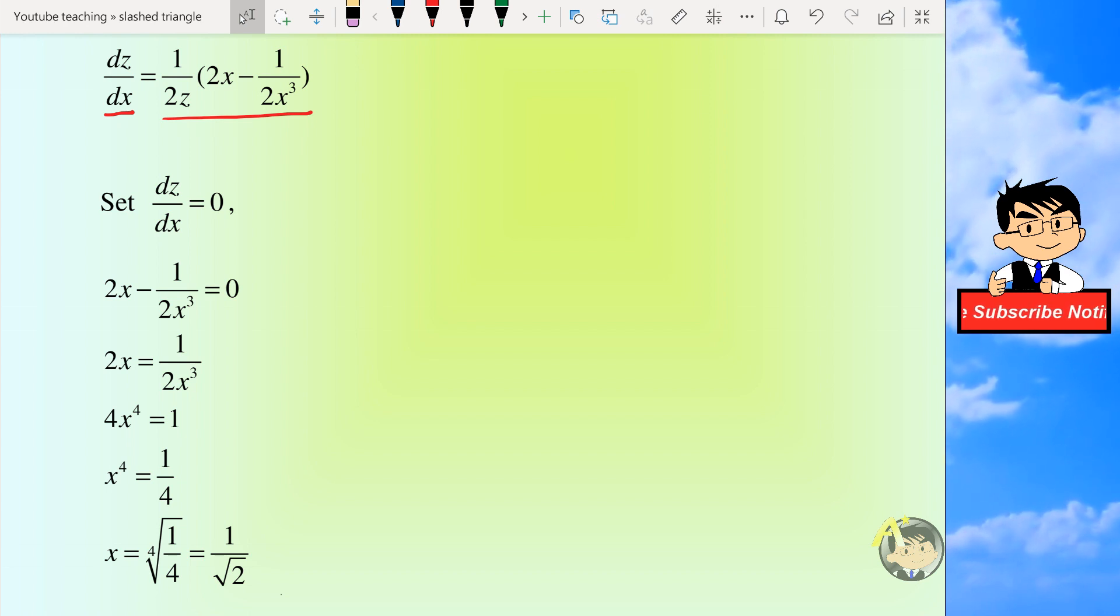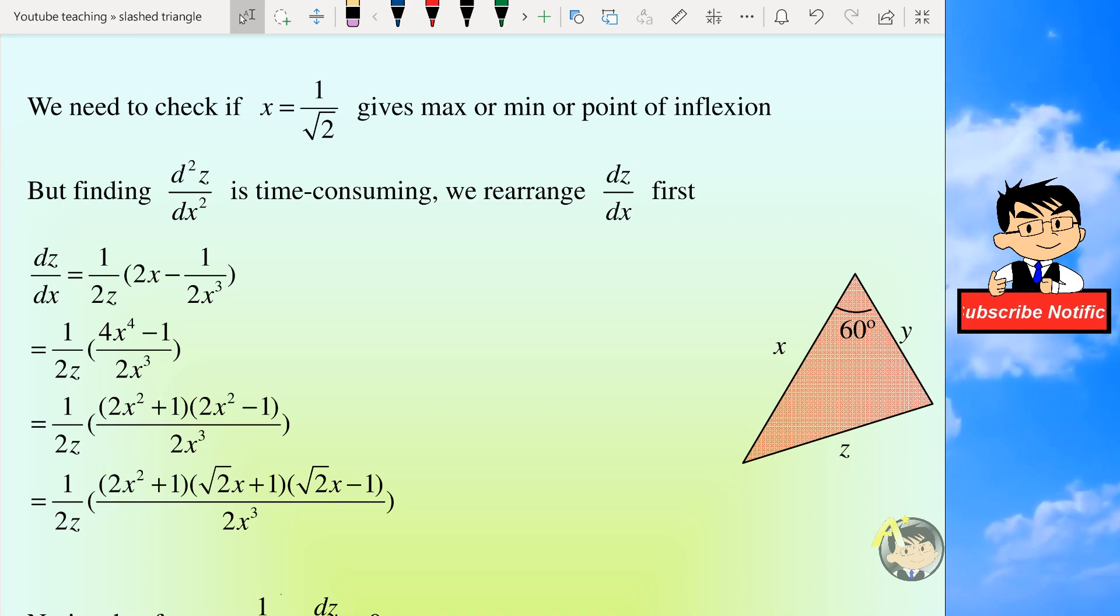So we set dz over dx to be 0 to check for its max, min, or point of inflection. Notice that z is always greater than 0 since it is the side length of a triangle. So we can solve x to be equal to 1 over root 2 after some algebra. So now we want to check the concavity of the function, but I know that to find the second derivative is very time consuming and complicated, so we will arrange dz over dx first.